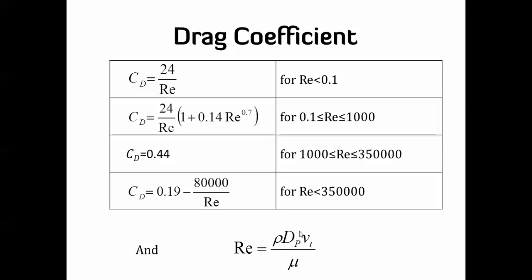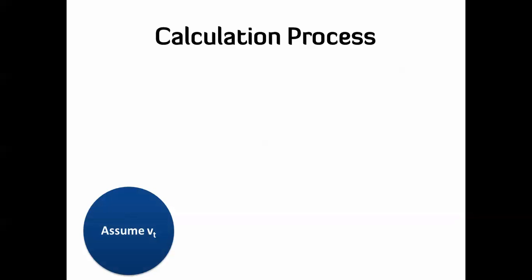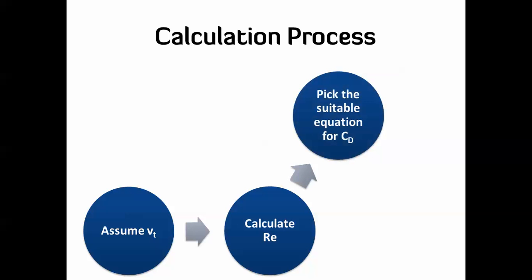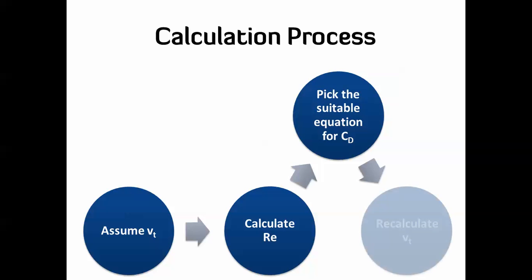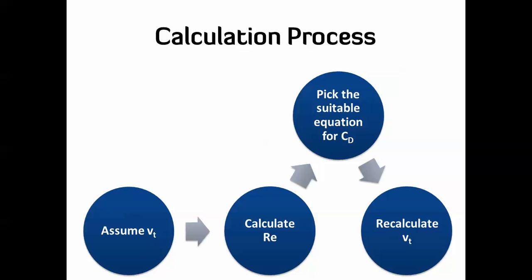There is one problem: the Reynolds number is calculated from the terminal velocity, which is exactly what we're trying to calculate. So it's not as straightforward as it looks, and the process has to be iterative. You assume V, use it to calculate Reynolds, then calculate CD from Reynolds, then recalculate V, and compare the assumed V to the calculated V. If they match, you're done; if not, you repeat the cycle.